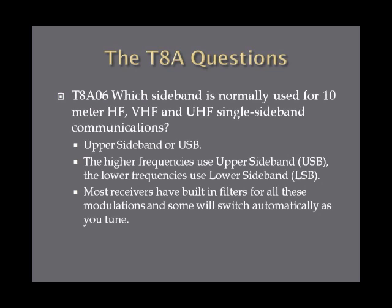Which sideband is normally used for 10-meter HF, VHF, and UHF single sideband communications? The answer is upper sideband, or USB. The higher frequencies, which include 10 meters HF, VHF, and UHF, use upper sideband. The lower frequencies, like 40 meters, 80 meters, and 160 meters, use lower sideband. Most receivers have built-in filters for all these modulations, and some will switch automatically as you tune. Upper sideband is used primarily on 10 meters, VHF, and UHF.